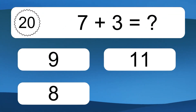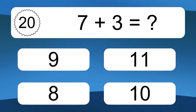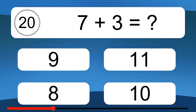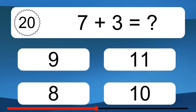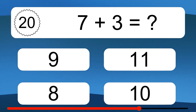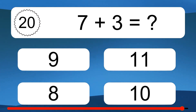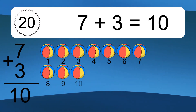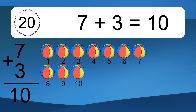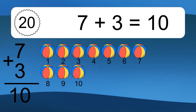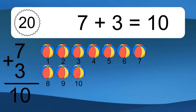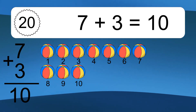7 plus 3 equals what? 7 plus 3 equals 10. Let's count it. 1, 2, 3, 4, 5, 6, 7, 8, 9, 10.